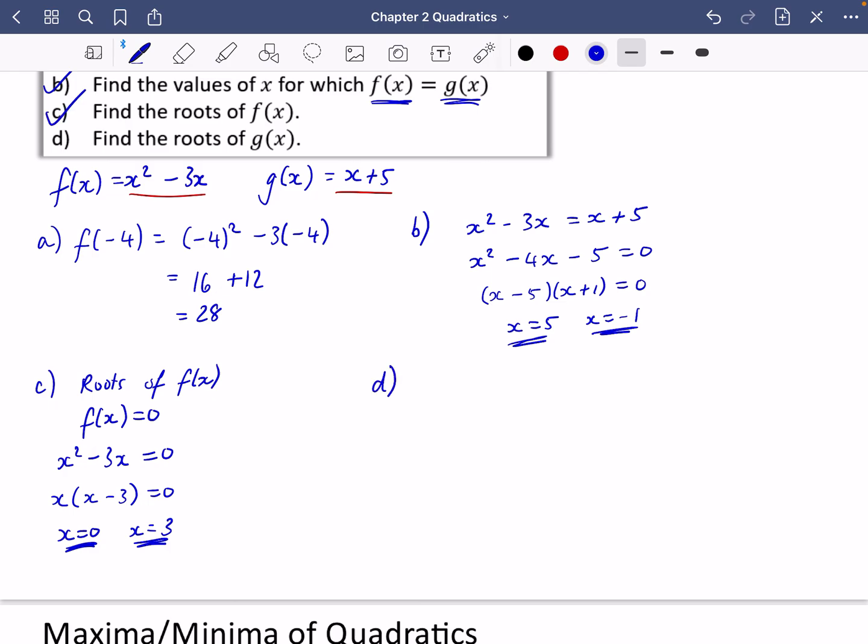We'll do the same for D. It says find the roots of g of x. That means that g of x is 0. Remember, g of x is just x plus 5. So x plus 5 equals 0 or x is equal to negative 5. Just a little bit about that new language of roots. We're going to keep going and do some maxima and minima in just a second.